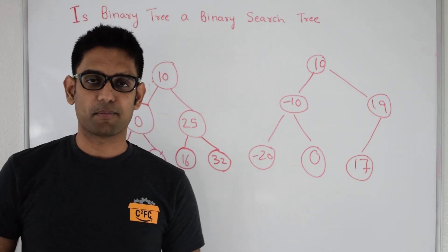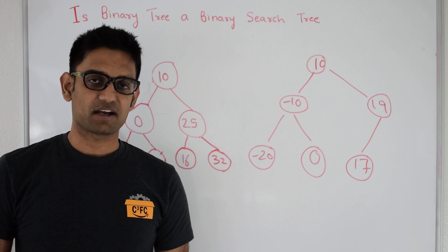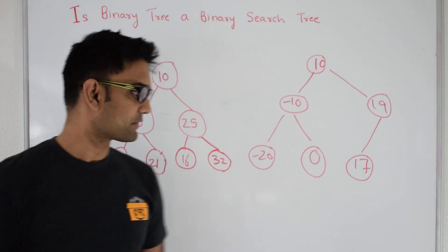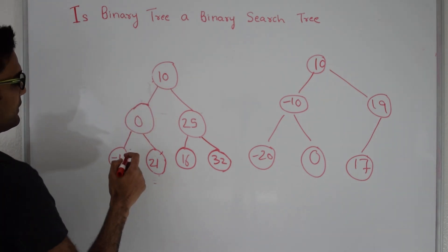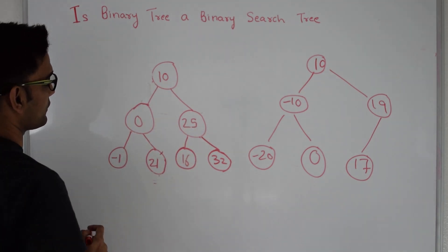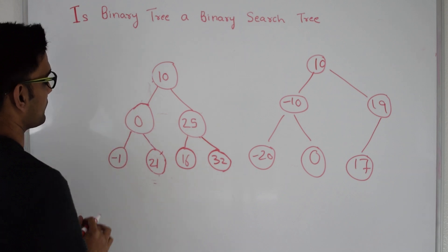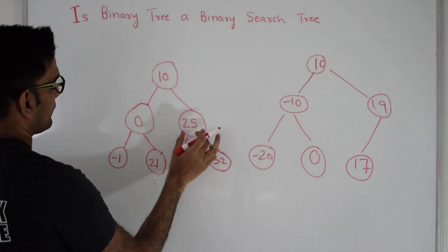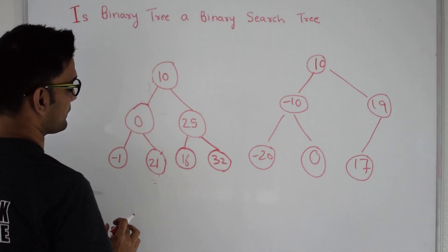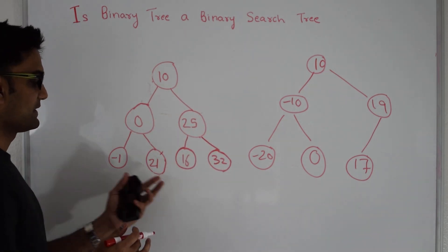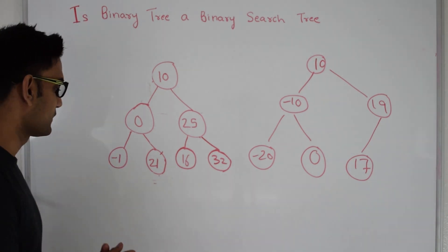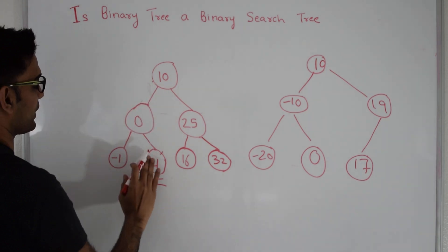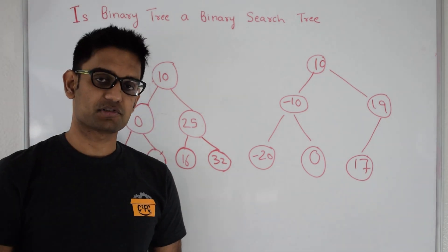The first thought which comes to your mind to solve this problem is: why not check for every node if it is greater than its left and less than its right? Let's see if that works. So 10 is greater than 0 and less than 25, so 10 is good. 0 is greater than minus 1 and less than 21, so 0 is good. These are leaf nodes. 25 is greater than 16 and less than 32. So it seems like it's a BST, but it's not — because 21 is greater than 10, so 21 cannot be on the left side of 10. So this approach does not work.